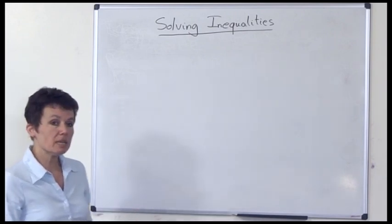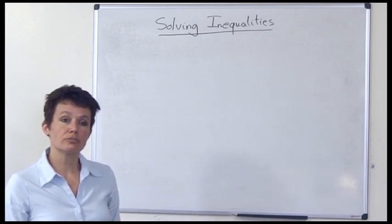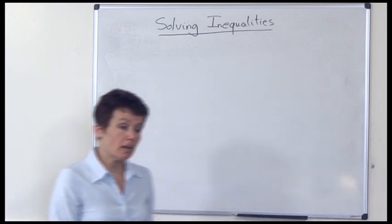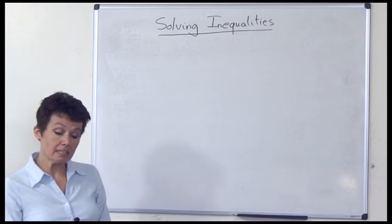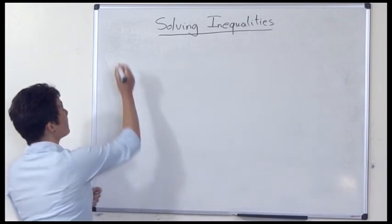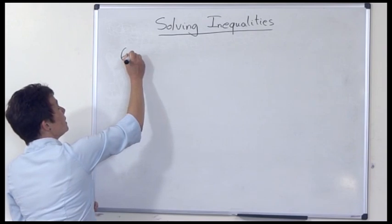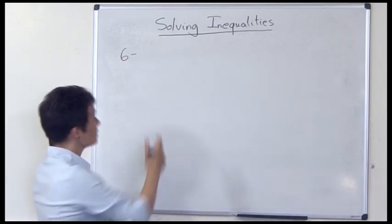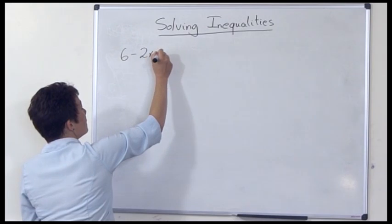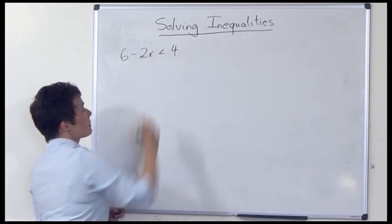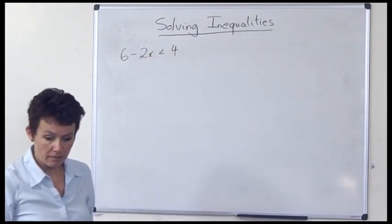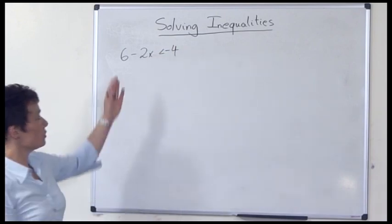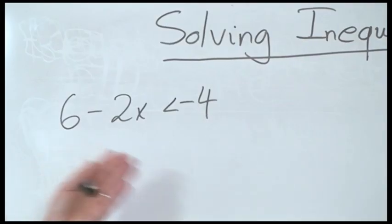So what does it mean to solve an inequality? Let's first look at a very simple, easy example which you probably are familiar with — something like 6 minus 2x is less than 4. Actually I want less than negative 4. So solving such an inequality, what do we do?